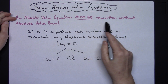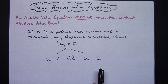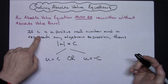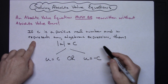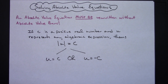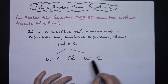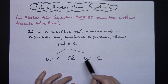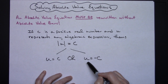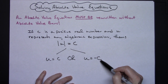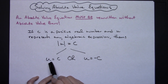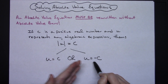An absolute value equation must be rewritten without the absolute value bars before you attempt to solve it. If C is a positive real number and U represents any algebraic expression, then the absolute value of U equals C. You can take away the absolute value bars and break it into two equations: one that looks just like the original without the bars, and a second one where you take the opposite sign of C. This will always be an OR, because you'll have two possible answers.